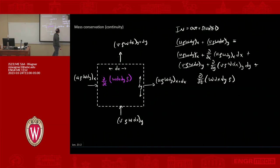So then we're left with the statement: zero equals ∂(ρu)/∂x plus ∂(ρv)/∂y plus ∂ρ/∂t.